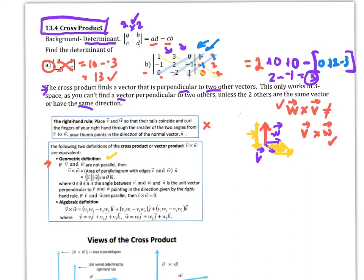We need the angle between those two vectors, and that will help us with the sine of theta. The algebraic definition deals with the determinant that we just talked about for matrices. With our vectors, we're just going to set this up and multiply it out. For the I coefficients, we take the things not associated with I and multiply them together. With the J's, we take the things not associated with J and multiply them together, but we have to get the order appropriate — which one's positive, which one's negative — and that's done with the matrix.